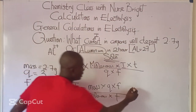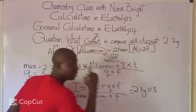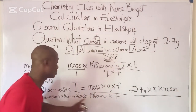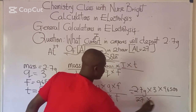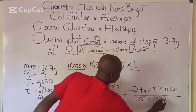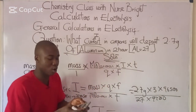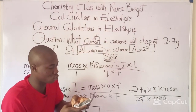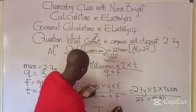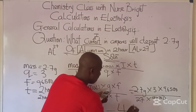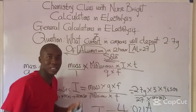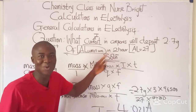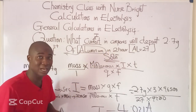Time is 2 hours, which must be converted to seconds: 2 × 60 × 60 = 7,200 seconds. Substituting: I = (2.7 × 3 × 96,500) / (27 × 7,200). Calculating gives a current of 4.021 amperes. This is the current that will deposit 2.7 grams of aluminum.